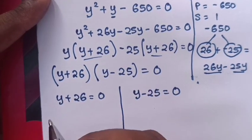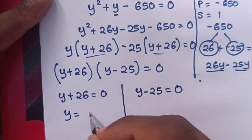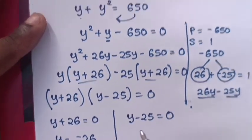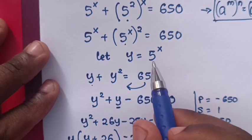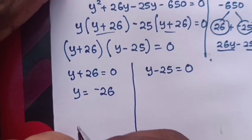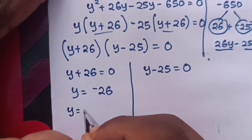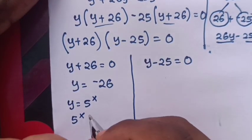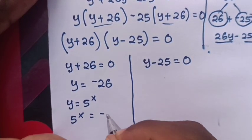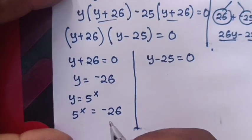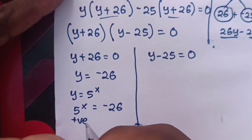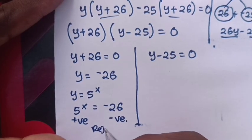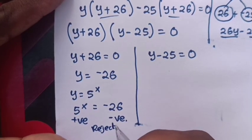From the first case, y + 26 = 0, so y = -26. But recall y = 5^x. Therefore 5^x = -26. But 5^x is always positive and -26 is negative. Therefore, this choice is rejected.